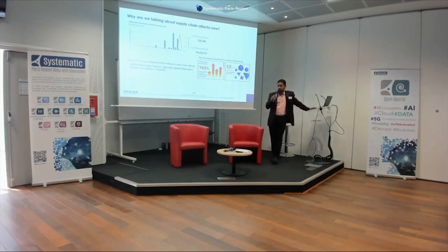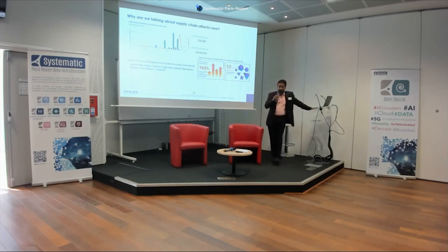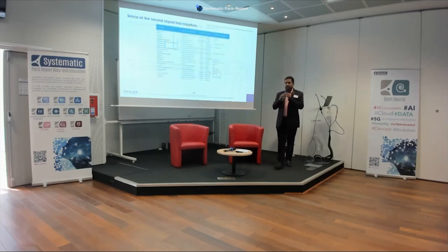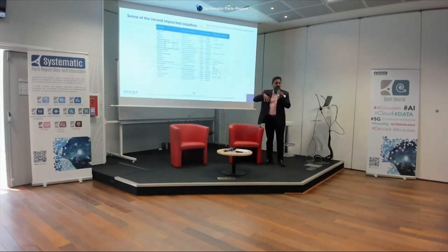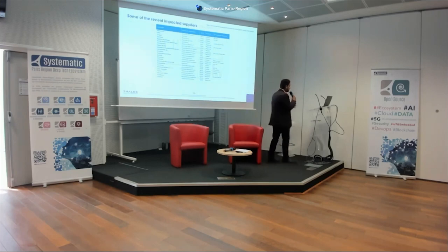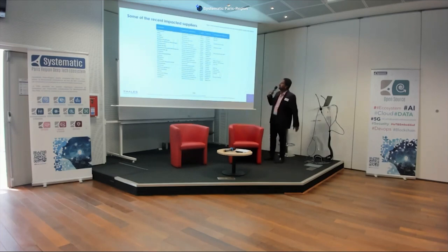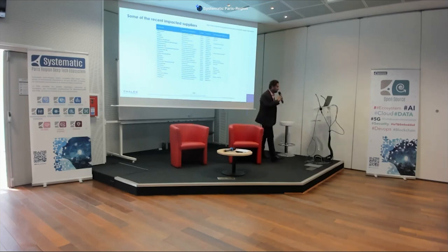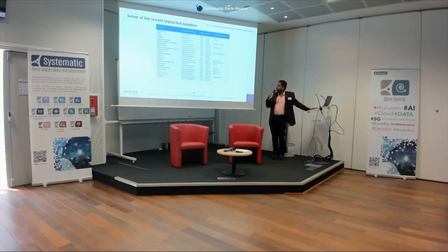Many real attacks have recently happened to many companies. According to ENISA, the European government agency, many suppliers have been attacked, impacting large companies globally — not just regional ones. Groups like APT29, the Russian advanced persistent threat group, have been actively targeting these suppliers.